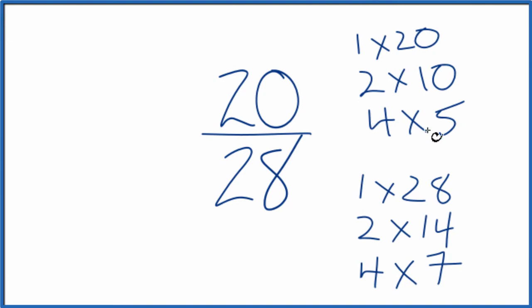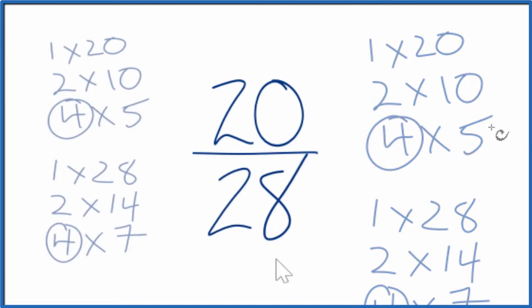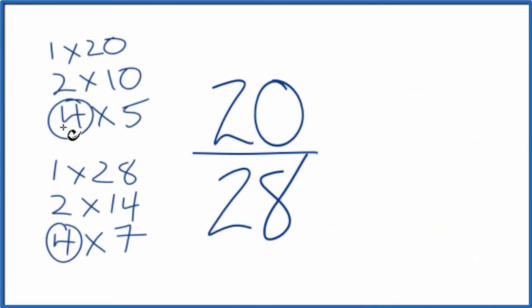These are the factors for 20 and 28. We're looking for the greatest common factor, and that is 4. 4 goes into 20 and 28, so let's move these over here and then we'll divide 20 by 4.